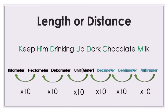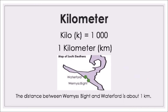Let's examine length. Remember: keep him drinking up dark chocolate milk. Moving from millimetre to centimetre, decimetre, metre, decametre, hectometre, kilometre — you are going up. The other way, you are going down — in multiples of 10. The kilometre is the largest unit; the millimetre is the smallest. One kilometre is denoted by km. Looking at a map, the distance between two settlements about 1 kilometre apart gives you an idea — use kilometres to measure pretty long distances.